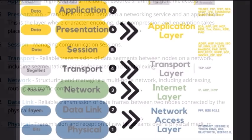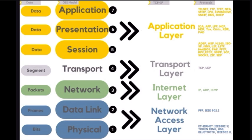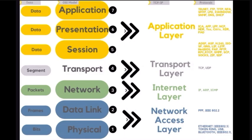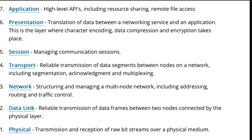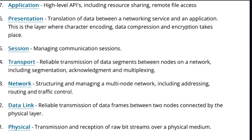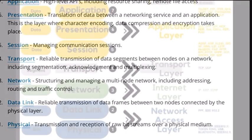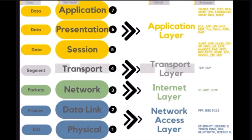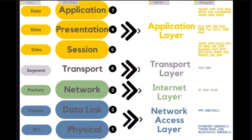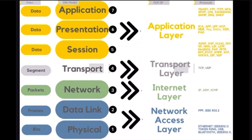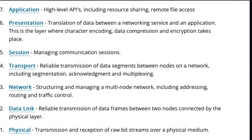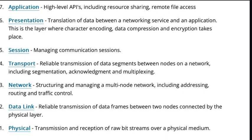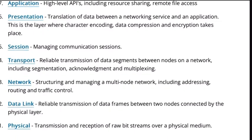Number two, the data link layer focuses on creating a reliable link between two directly connected nodes, providing error detection and correction. Ethernet is an example of a data link layer protocol. Number three, the network layer manages the addressing and routing of data between devices on different networks. The internet protocol or IP operates at this layer. Number four, the transport layer, which ensures end-to-end communication and data flow control. The TCP or transmission control protocol and the UDP or user datagram protocol are transport layer protocols.